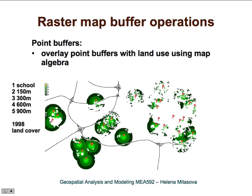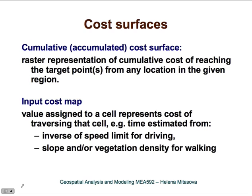Overlaying the buffers with the land use map in a similar way to the noise impact analysis, we can see that schools mostly inside the Beltline have very little vegetation or forest around them, while schools with more vegetation are on Centennial — though some has been lost to a golf course — and in the suburbs, where it is also disappearing. A city planner could use this analysis to plan where more trees should be planted. That covers buffers; we can now move on to even more complex proximity analysis: cost surfaces.